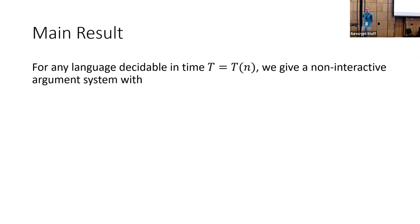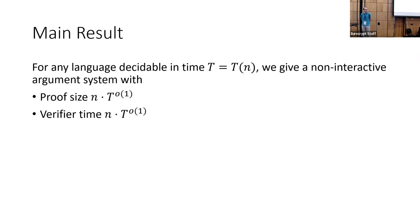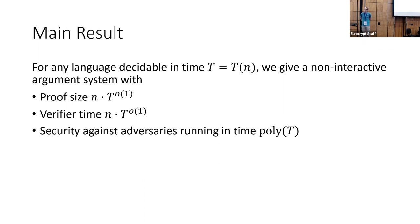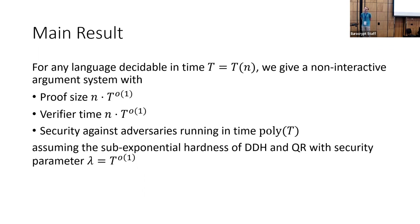I wanted to start by quoting the headline result of this paper. What we show is that for any language that can be decided in time T(n), we give a non-interactive proof system that is succinct — so the proof size and the verifier time are both n times two to the little-o of one. Importantly, this is much more efficient than just solving the original problem directly. We have security against any adversarial prover running in time polynomial in T, based on the sub-exponential hardness of both Decisional Diffie-Hellman and Quadratic Residuosity, with a security parameter that's T to the little-o of one.